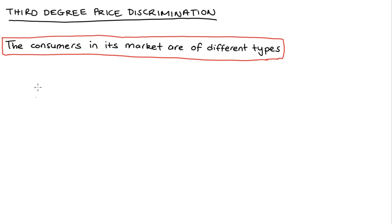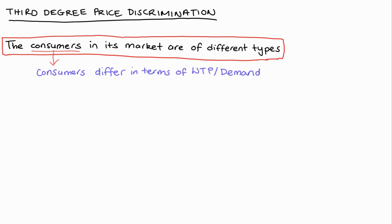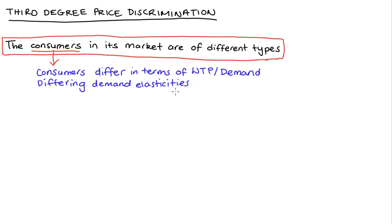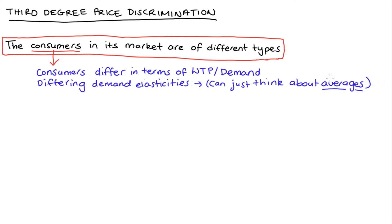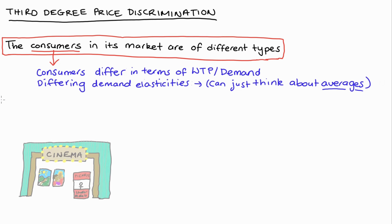To say that our consumers are made up of different types is just to say that our consumers are not identical — they differ in terms of their willingness to pay for the product, so in their demand. Sometimes courses and textbooks talk about this in terms of differing elasticities of demand, which is really just to say that their demand differs. We can talk about averages, since it's plausible that no one consumer is identical, but on average some types of consumers have a lower or higher willingness to pay relative to others. The classic example here is cinema tickets.